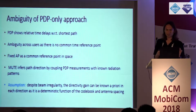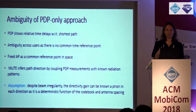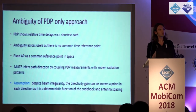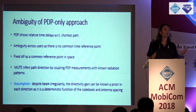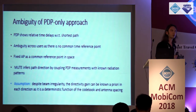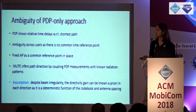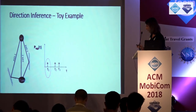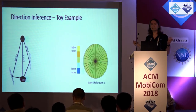The challenge when applying this approach to different clients is that the BDP shows relative time delays with respect to the shortest path, and there is ambiguity across different users because there is no common time reference. So instead of a common time reference, we use the access point as a common reference point in space. MUTE infers first-path direction — angle of arrival or angle of departure — by coupling BDP measurements for specific beams with known radiation patterns. Even though phase arrays create irregular beam patterns, you can still know the beam pattern because it's a deterministic function of the codebook and the antenna spacing.